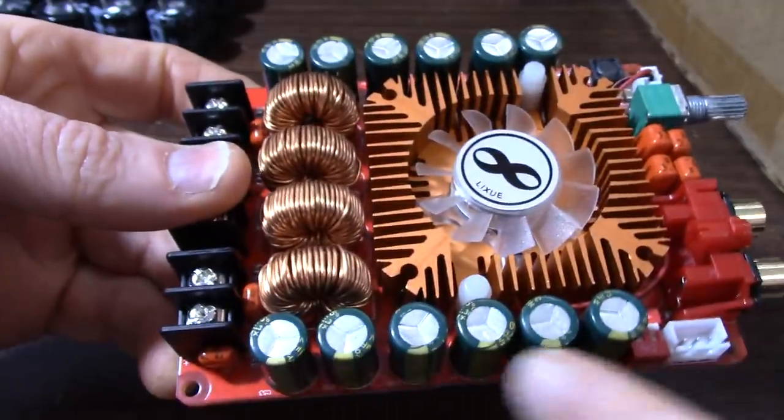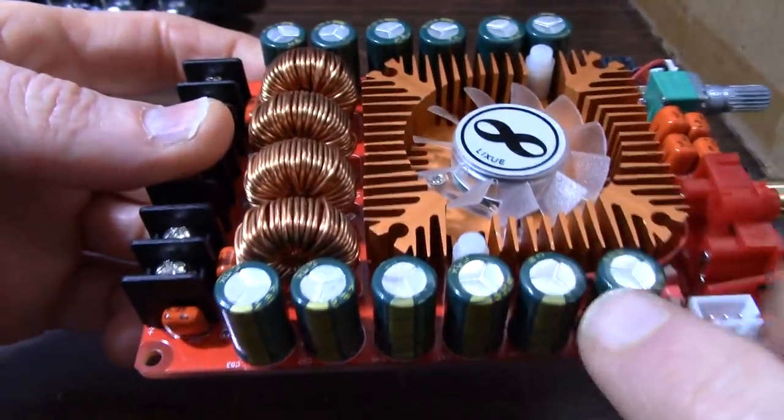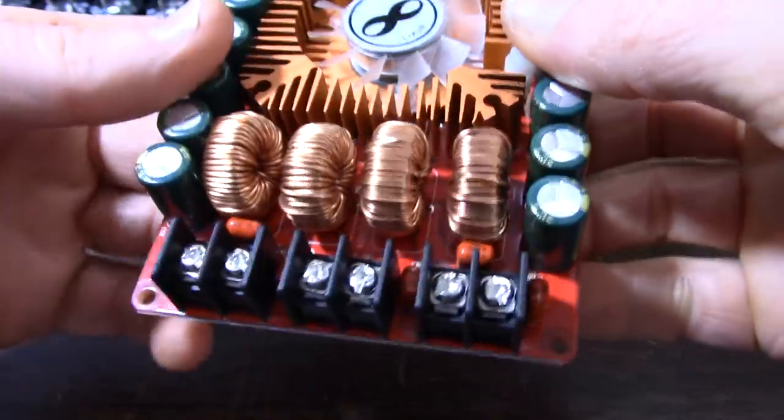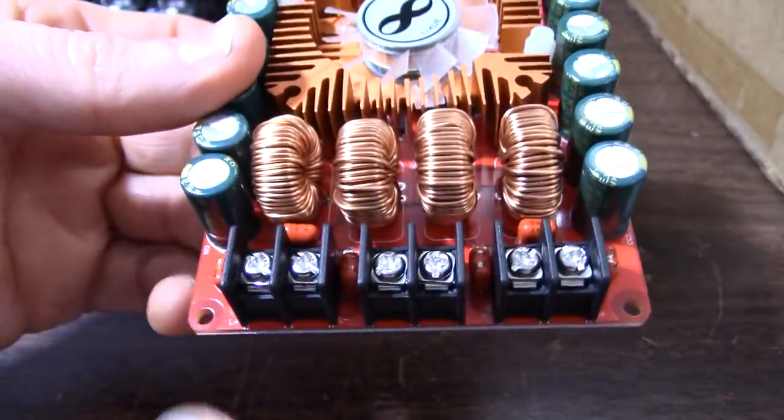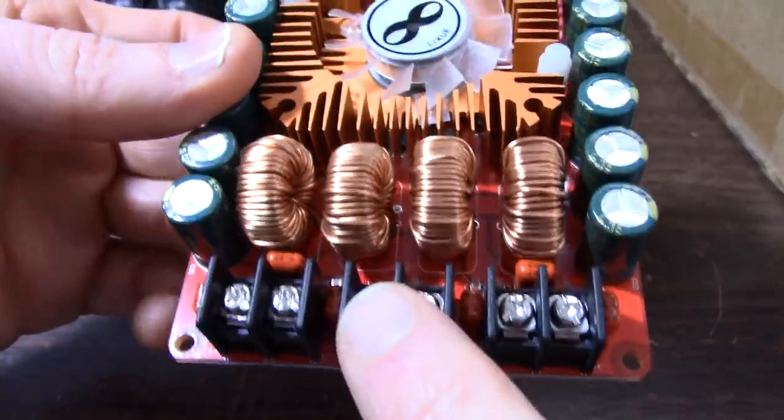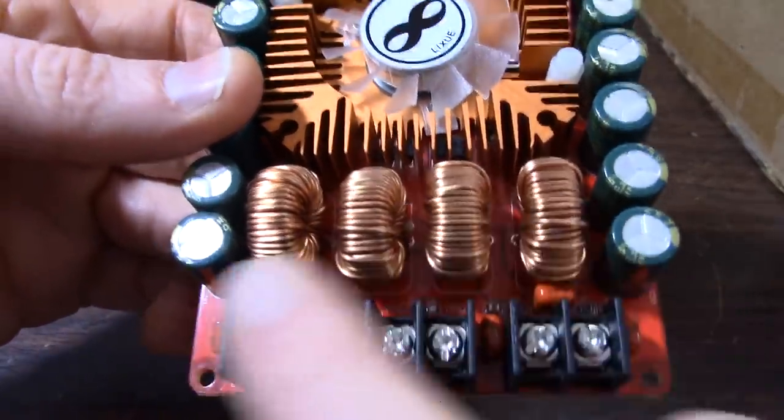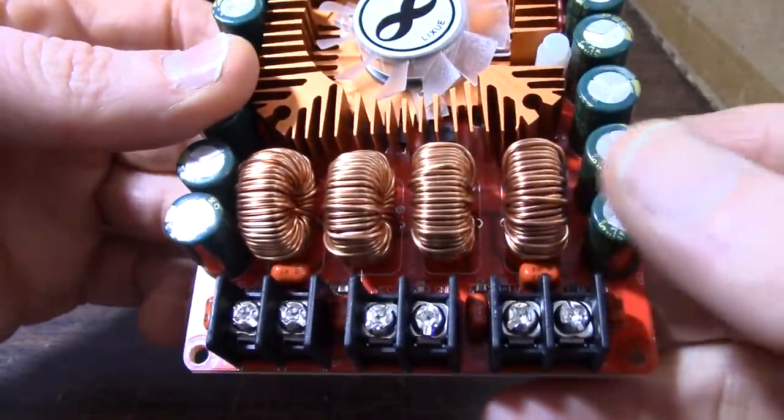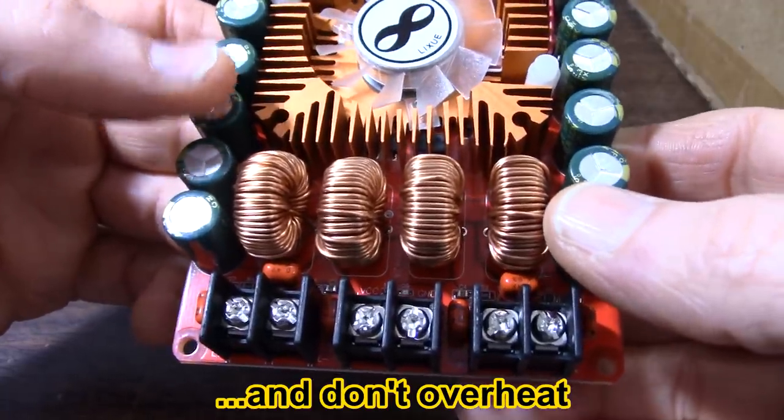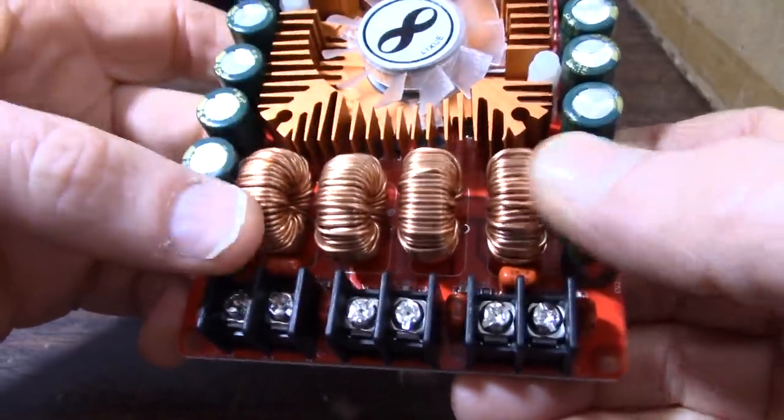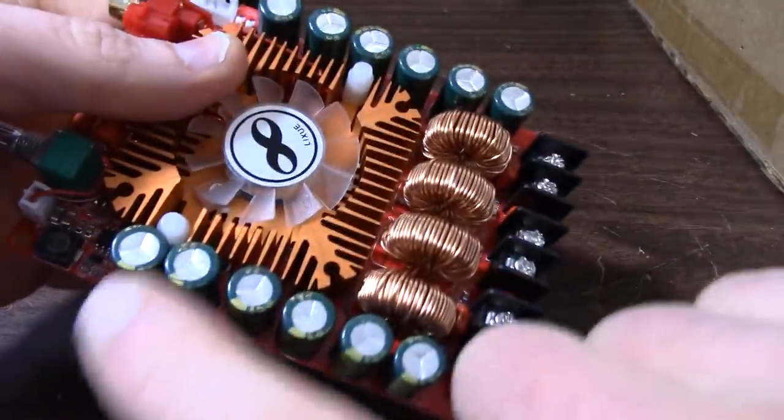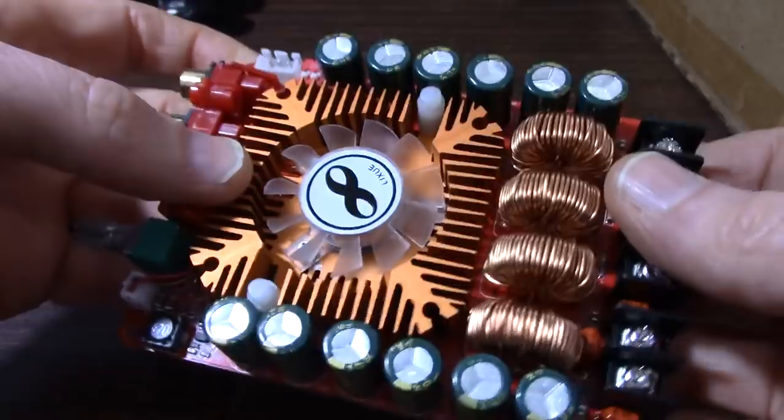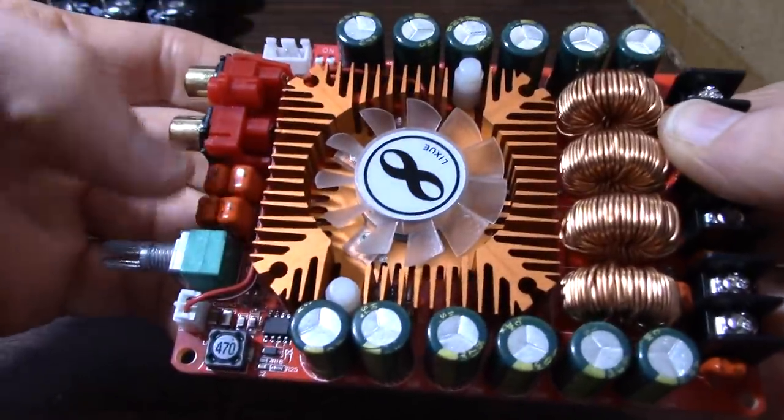Along the sides here we have rail stiffening caps. When the amp is called on to deliver high current, this helps keep the rail from sagging. On the end we have screw connectors for left-right outputs and power. Looks like we have nice size chokes - hopefully they selected the correct value so we don't have that roll-off at high frequencies. If you recall me testing the TPA3116 boards, some of those had the incorrect value of chokes and rolled off the high frequencies quite severely. We'll do all the tests - the power tests, the frequency response - see how this thing performs.